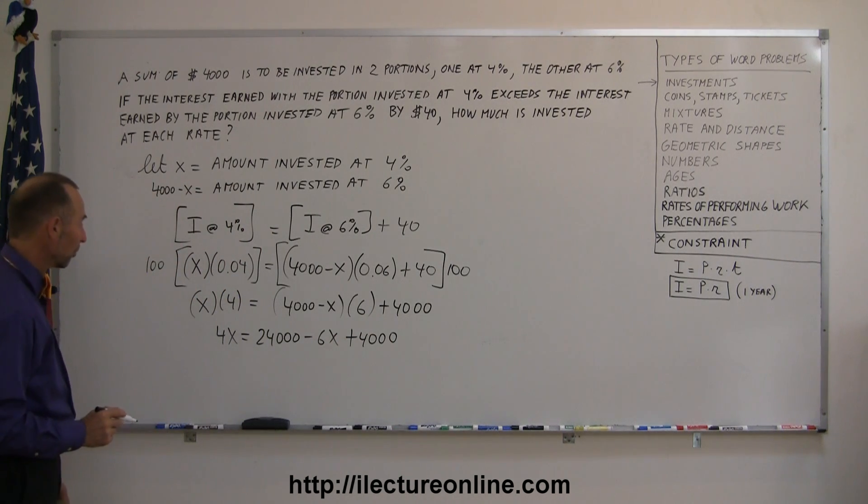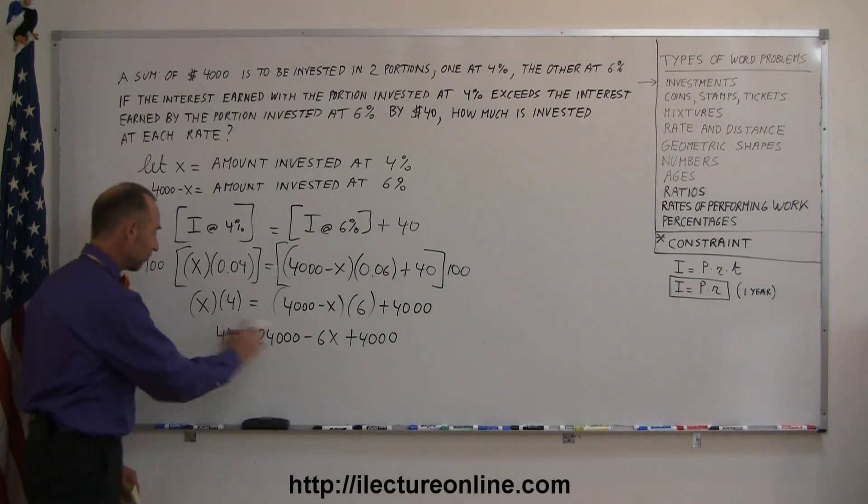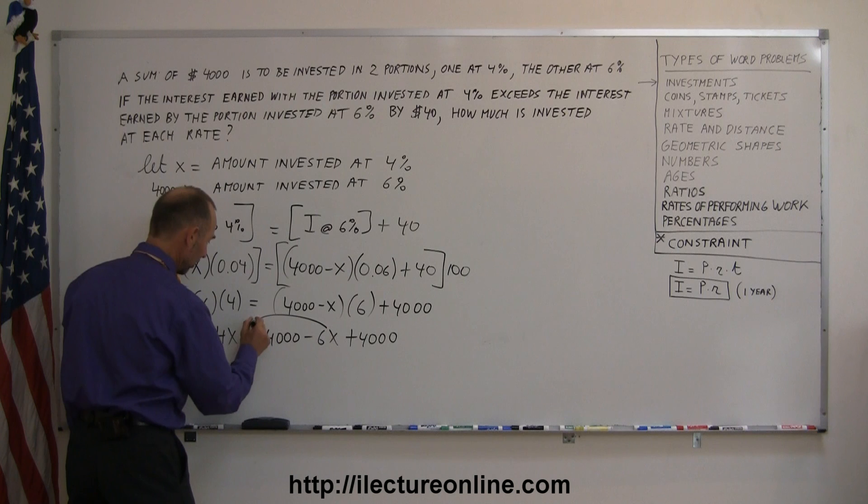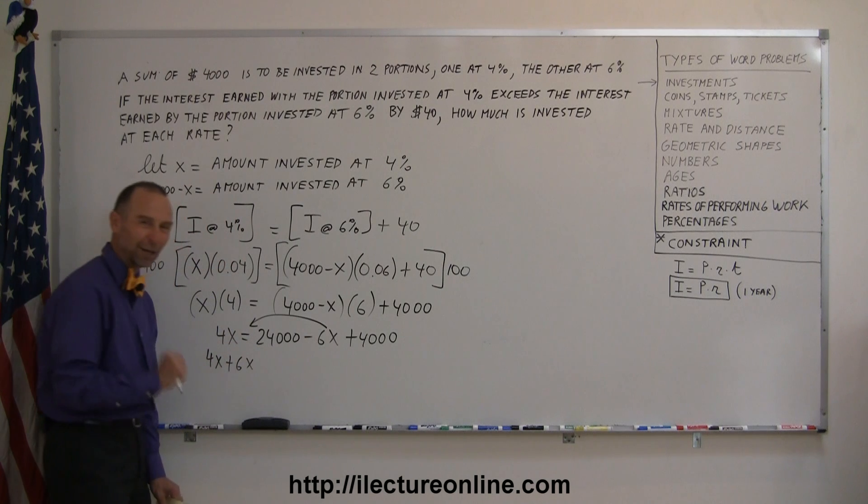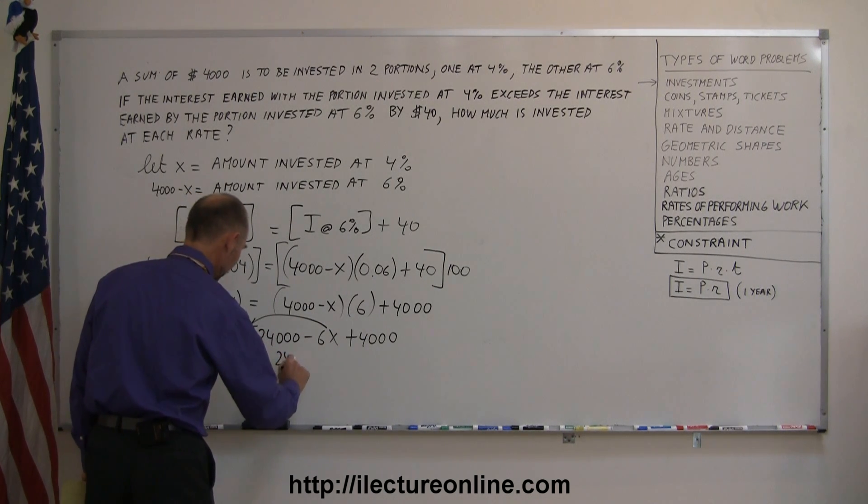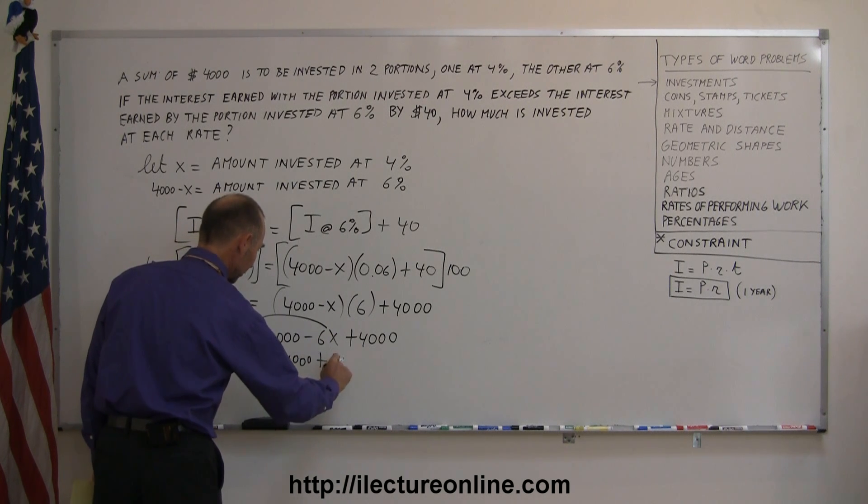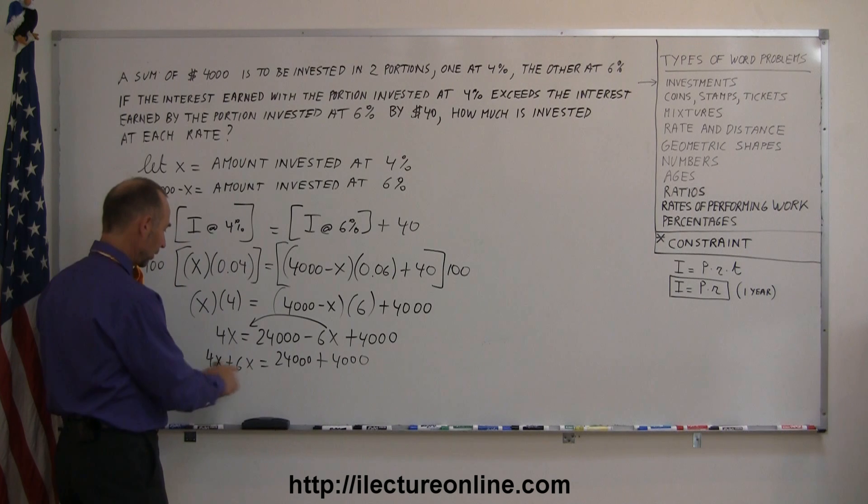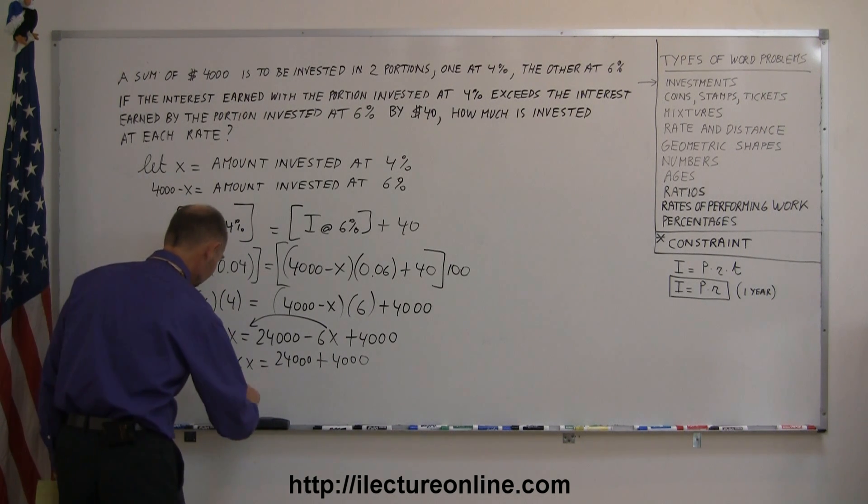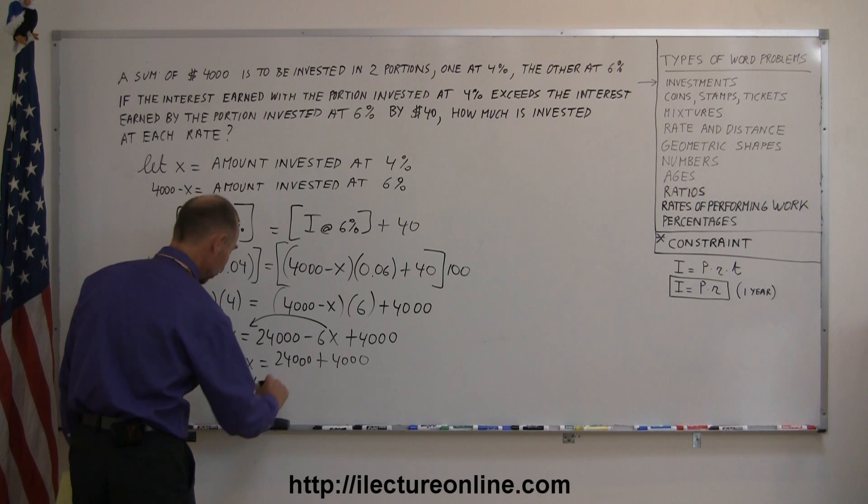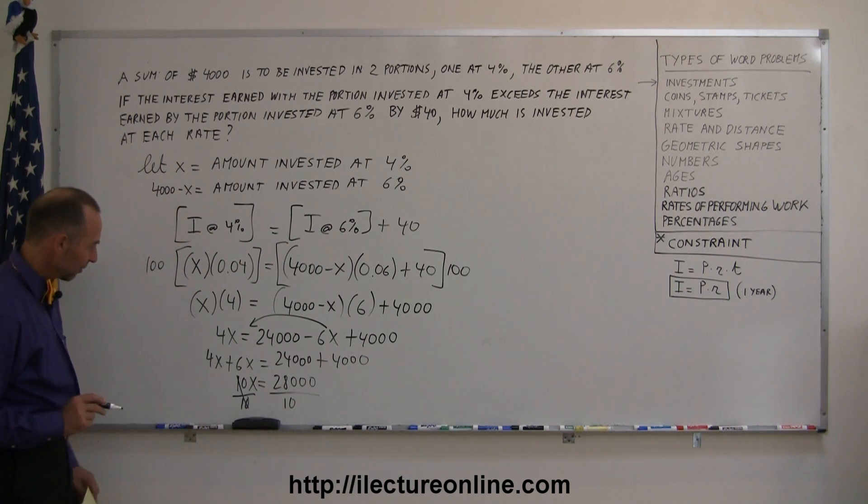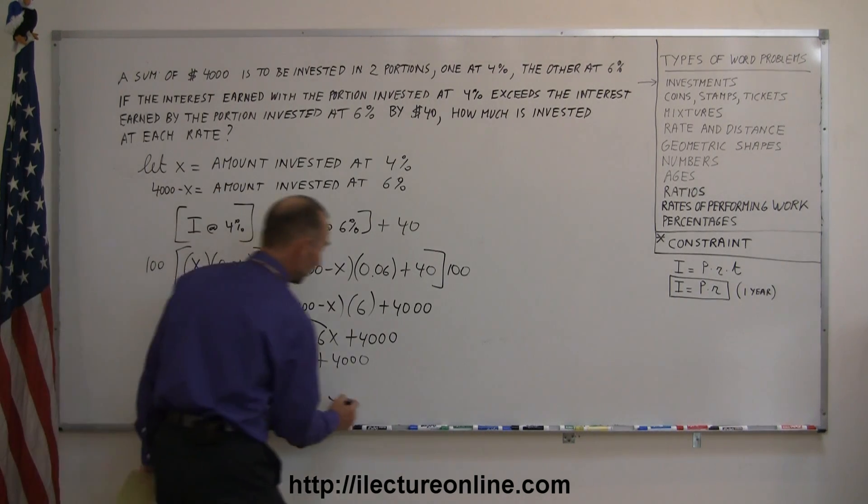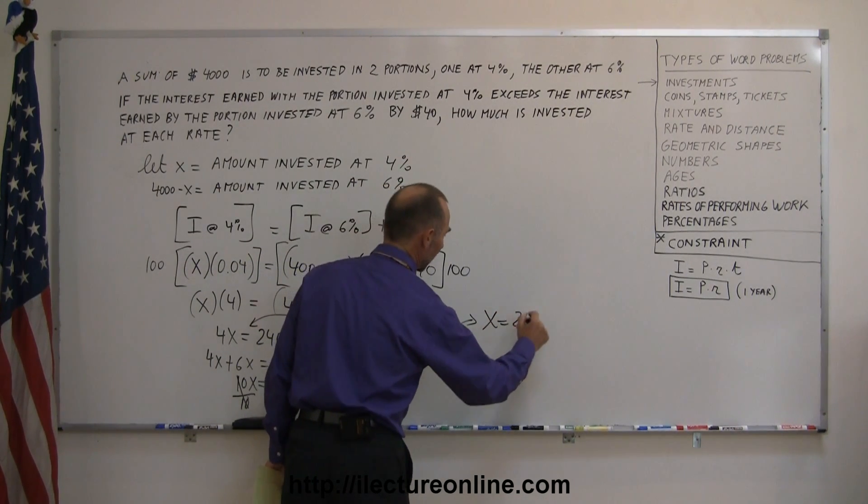The next step is to move all the terms with an X to the left side. Everything else stays on the right side, so this minus 6X goes over here to the other side, that becomes 4X plus 6X. Whenever you cross the equal sign, you want to change that sign, and on the right side we have 24,000 and plus another 4,000. So 4X plus 6X, we can combine like terms now, so this is 10X equals 24,000 plus 4,000 is 28,000. And divide both sides by the numerical coefficient in front of the X, that cancels out, and 28,000 divided by 10 is 2800. So we end up with X equals 2800.